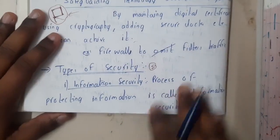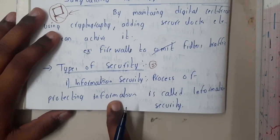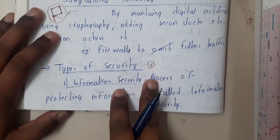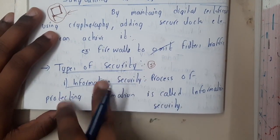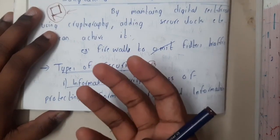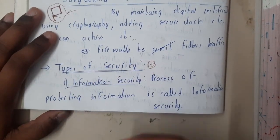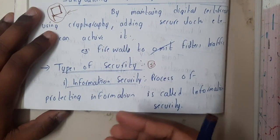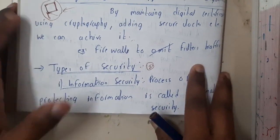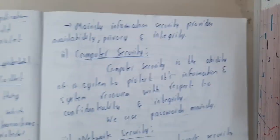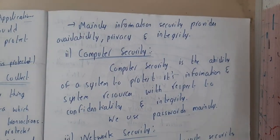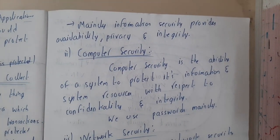First, let us go through information security. The process of protecting information is called information security. Here, what you are securing is the information — whatever you are sharing, sending to a friend, or informing to your parents or someone. You are protecting that information because it is important or crucial for you. We'll go through the formal definition in the next lecture.